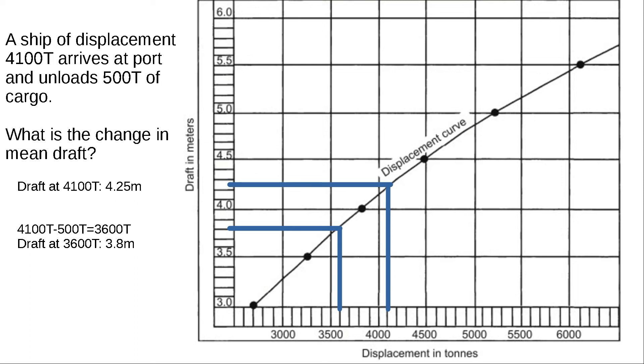Apologies for skipping ahead there. The reason why I looked at 3,600 tons is because the change in displacement of 500 tons brings us down to 3,600 tons.